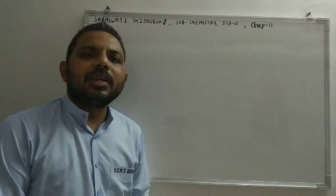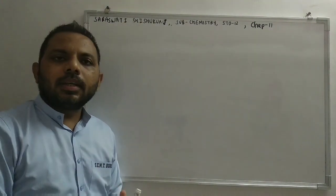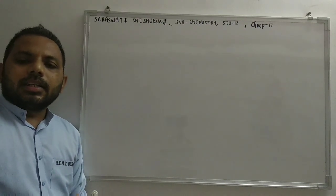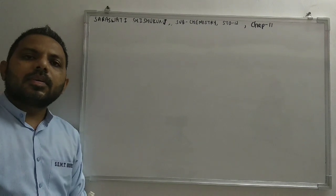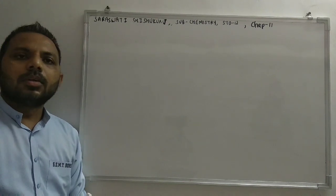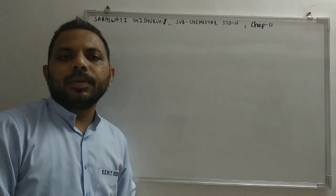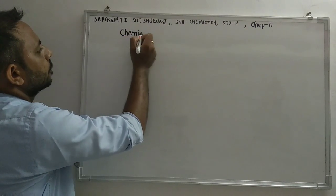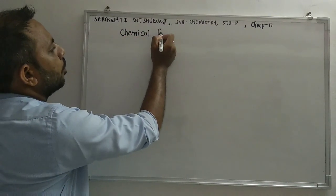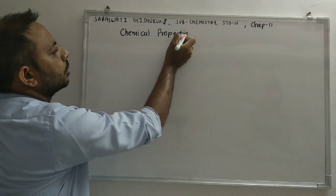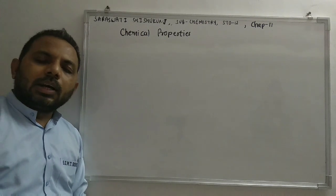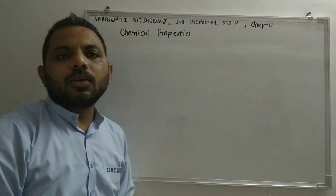Hello students, we have been discussing Chapter 11: Alcohol, Phenol, and Ether. In the last lecture we discussed physical properties of alcohol and phenol. Today we are going to start a new topic — chemical properties of alcohol and phenol.